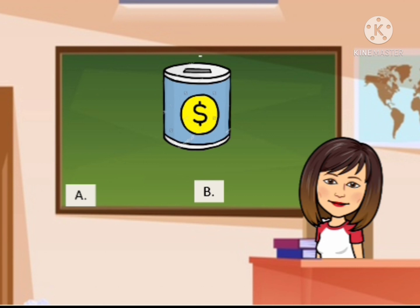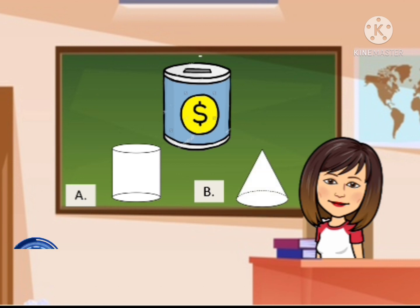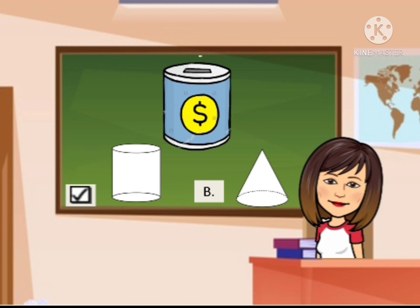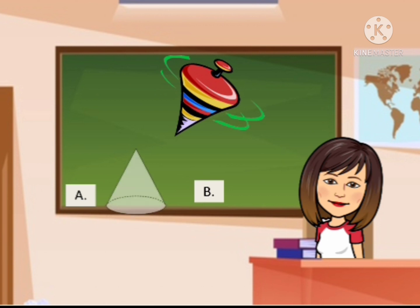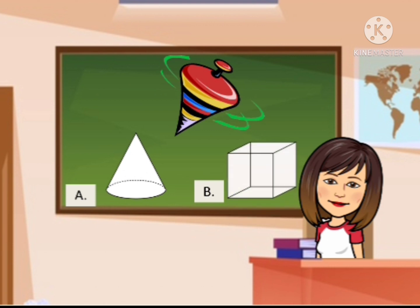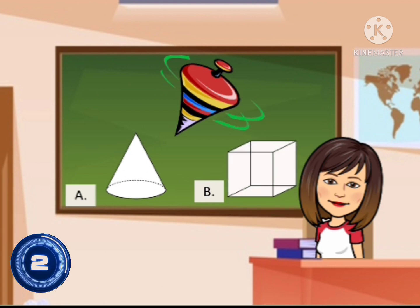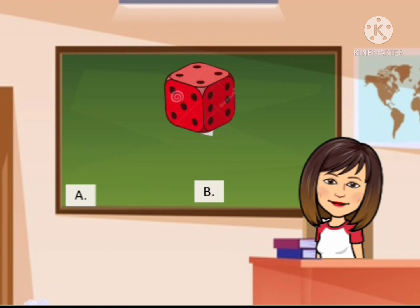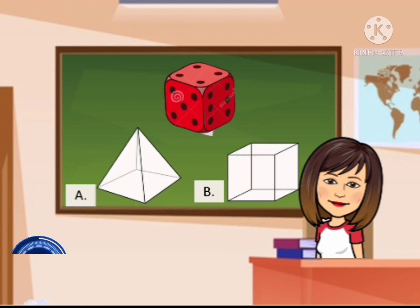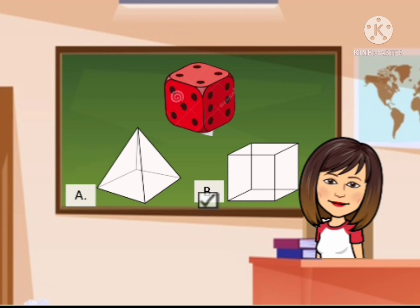Next, what is the 3D shape of a coin bank? Number 4. Is it A. cylinder or B. cone? Fantastic! It is a cylinder. Number 5: top. Is this similar to A. cone or B. cube? Correct! Letter A. Last, we have a dice. Is this similar to A. pyramid or B. cube? Wonderful answer! It is a cube.